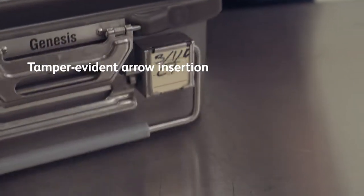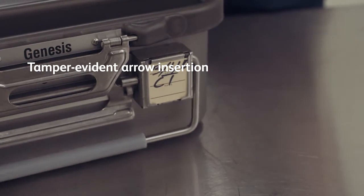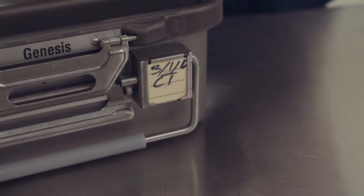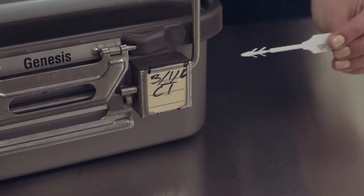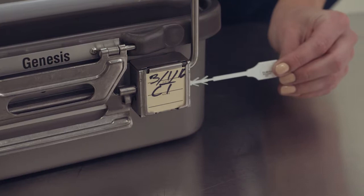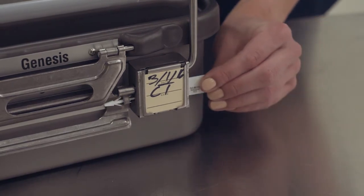To insert a tamper-evident arrow, move the carrying handle to an upright position. Orient the arrow so that the chemical indicator dot is facing outward. Insert one arrow into the open channel found under the data block. Advance the arrow until both sets of tabs have completely passed through and are visible.